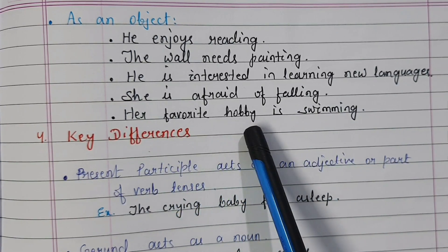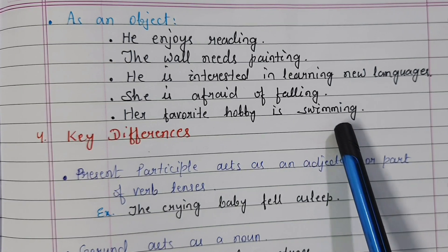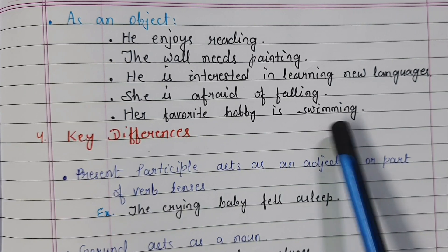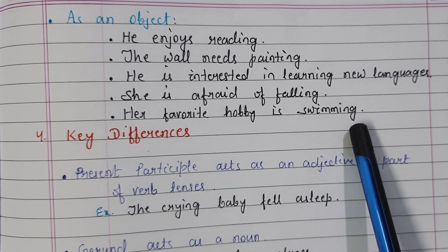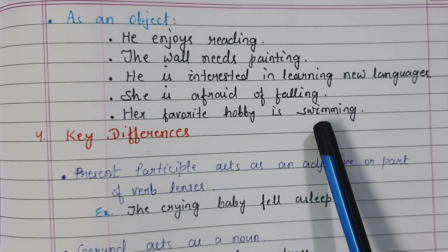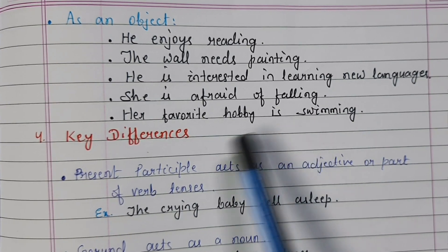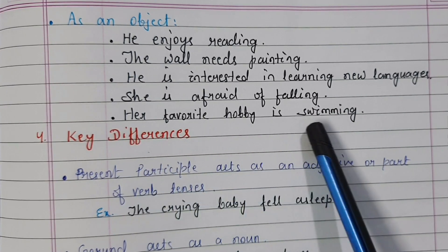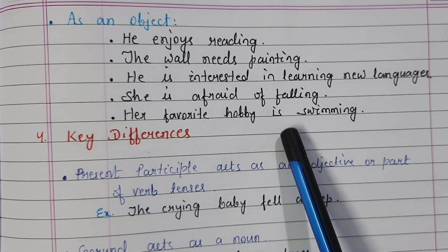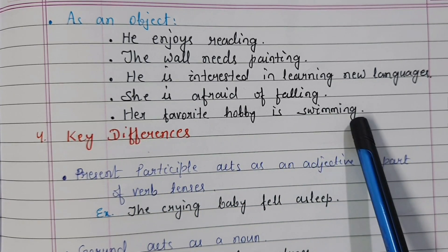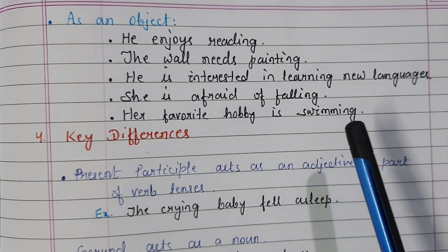'Her favorite hobby is swimming.' Here swimming is not part of a verb tense. Swimming is a complement of the verb 'is' — the complement of the sentence. So swimming here acts as a noun; it is a gerund.